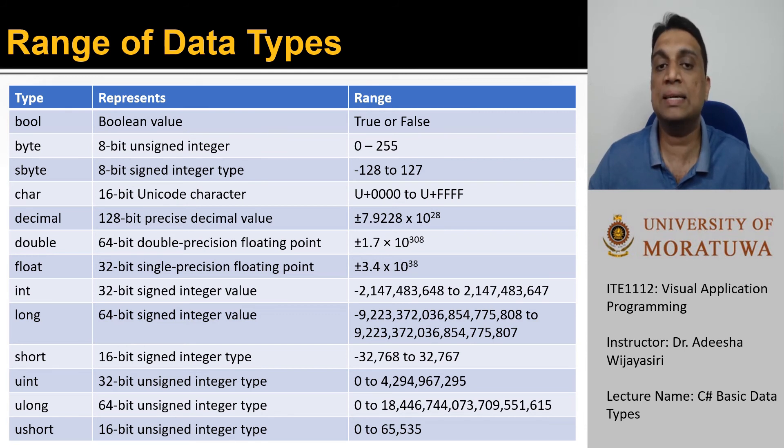We already discussed about the char data type. Memory space allocated to char data type is 16 bits. Decimal is a data type used to represent 128-bit decimal values. And this provides higher precision over float data types.